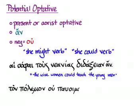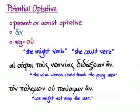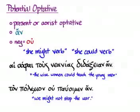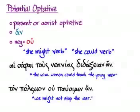Another example: ton polemon ou pauoimen an. Here we have only an optative as our main verb, the particle an, and this time it's negative with ou. The translation is 'we might not stop the war' — that's the potential, that's the possibility. You'll notice that potential optatives look like the second half of a future less vivid conditional, which you've translated as 'would verb' with the formulation ei plus the optative and the optative plus an. You're already pretty used to seeing this to express potential ideas — what could happen.